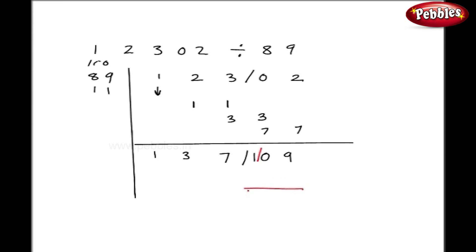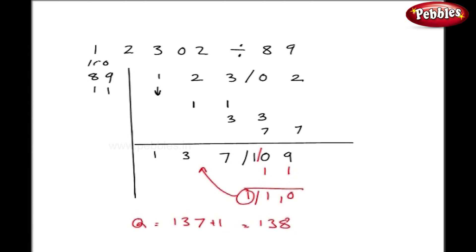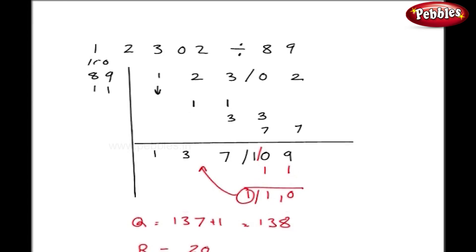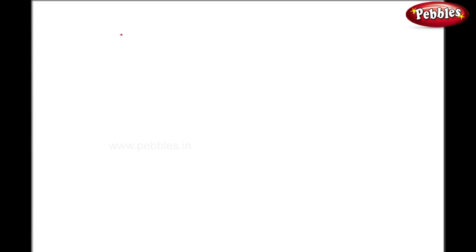So I will take this 1 down. 1 into 1 is 1, again 1. I get 1 and 10. This one should be added to the left-hand side: 137 becomes 138, and my remainder is 20.